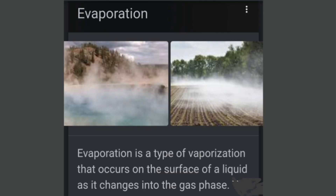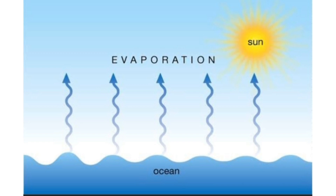Here also you can see water evaporating from the fields and from the water body. Evaporation is a type of vaporization that occurs on the surface of a liquid as it changes into its gaseous phase. From the ocean also, the water absorbs the sun's heat and evaporates into its vapors.